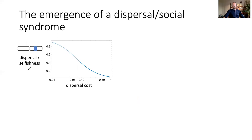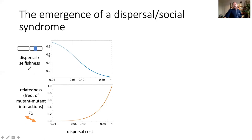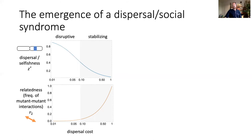Looking at the directional selection gradient, for a large chunk of parameter space in this model we find that as dispersal cost increases, the evolutionarily attractive value for dispersal decreases, and naturally as dispersal decreases relatedness increases — so far nothing surprising. What is new however is that while dispersal in the homogeneous island model is typically evolutionarily stable under stabilizing selection, here we find that when looking at the quadratic selection gradient, selection is disruptive when dispersal cost is low, and individual-based simulations confirm this.